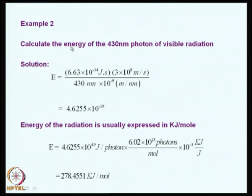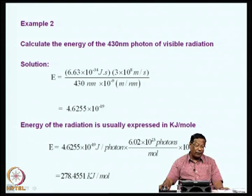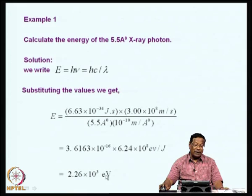The second example is to calculate the energy of a 430 nanometer photon of visible radiation. Using the same equation, putting in the values of h, c, and 430 nanometers converted to meters, we get a result in kilojoules per mole. For visible region, we express the energy of electromagnetic radiation as kilojoules per mole, whereas for X-radiation we express it in electron volts.